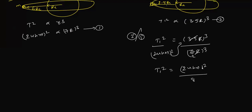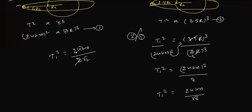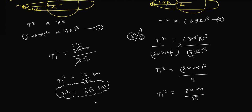Taking square root: T' = 24 / √8 = 24 / (2√2) = 12/√2 = 6√2 hours. This can also be written as 6√2, and substituting √2 = 1.414, we get the complete numerical answer.